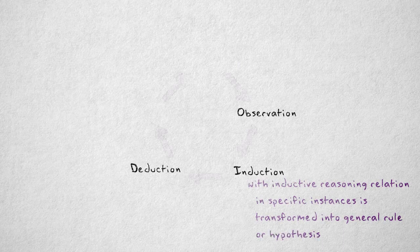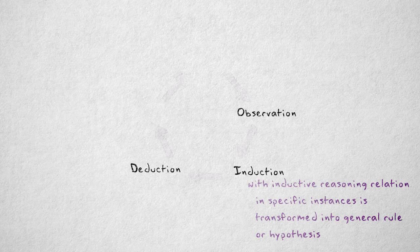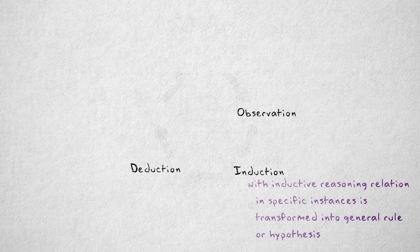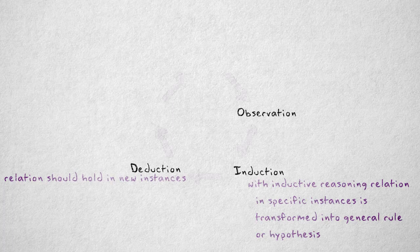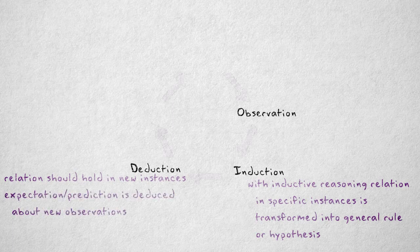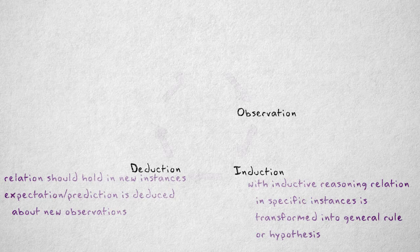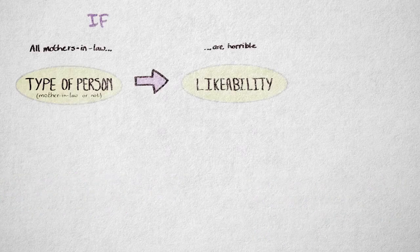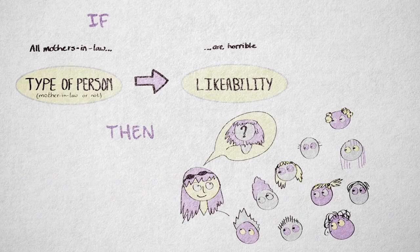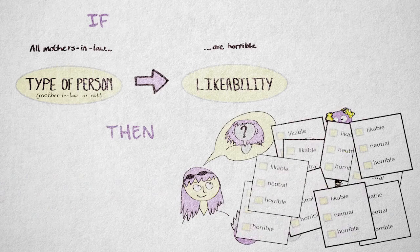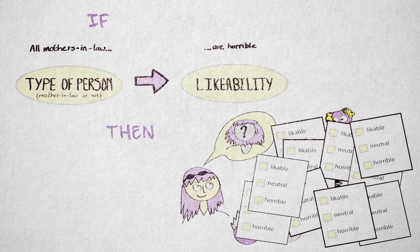In the deduction phase, we deduce that the relation specified in the general rule should also hold in new, specific instances. From our hypothesis, we deduce an explicit expectation or prediction about new observations. For example, if all mothers-in-law are indeed horrible, then if I ask ten colleagues to rate their mother-in-law as either likable, neutral, or horrible, they should all choose horrible.